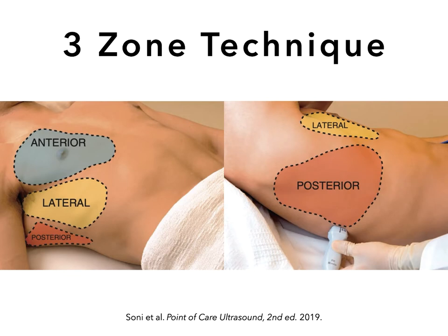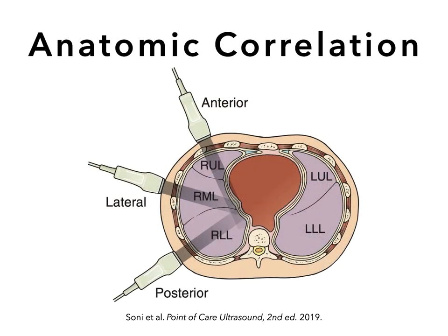There are different scanning techniques. For standard lung ultrasound, it is fine to use a simplified three-zone technique where you break up the chest into an anterior zone, a lateral zone, and a posterior zone where you are trying to image as posterolaterally as possible. Anatomically, the anterior zone corresponds to the upper lobe, the lateral zone to the middle lobe or lingula, and the posterior zone to the lower lobes.